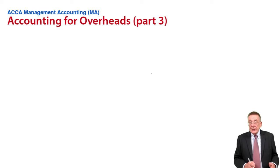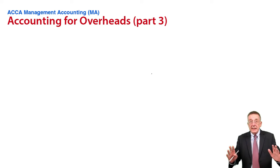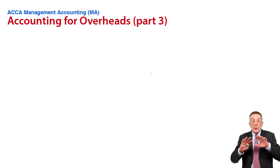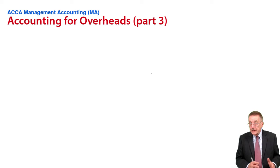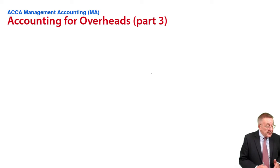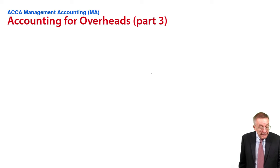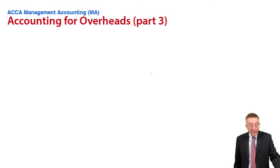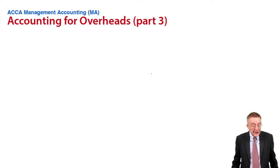In the previous lecture, I explained the distinction between production departments and service departments. I said that once we'd allocated the costs and apportioned the costs between all the departments, if there's any service department, we then recharge it to the production departments. We did a little example, example five, which I hope you found very straightforward. However, it can get a bit more interesting if you look at example six, where there's inter-service work done.